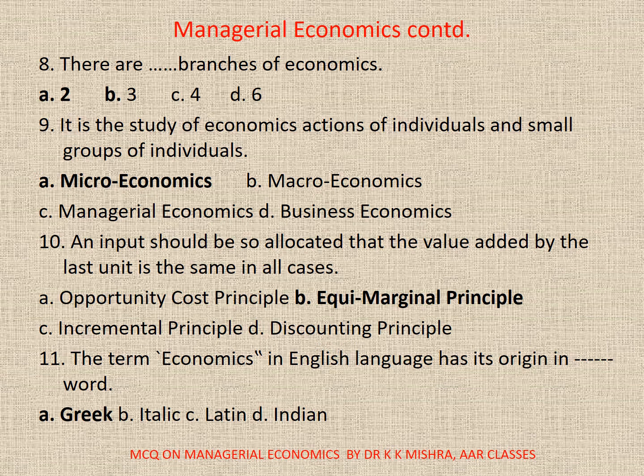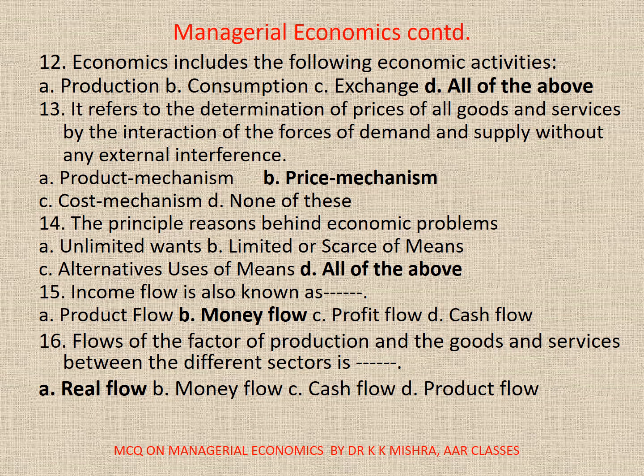Question 11: The term economics in the English language has its origin in a dash word. Correct option is A: Greek. Question 12: Economics includes the following economic activities — A. production, B. consumption, C. exchange, D. all of the above. Correct option is D: all of the above. Question 13: It refers to the determination of prices of all goods and services by the interaction of the forces of demand and supply without any external interference. Correct option is B: price mechanism. Question 14: The principal reasons behind economic problems — A. unlimited wants, B. limited or scarce means, C. alternative uses of means, or D. all. Correct option is D: all of the above.